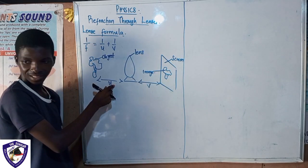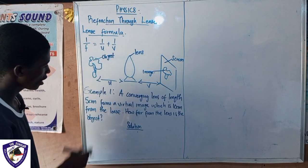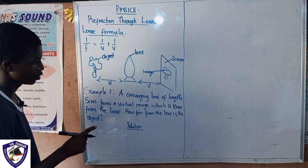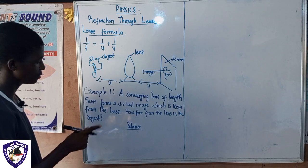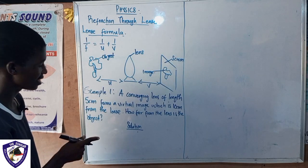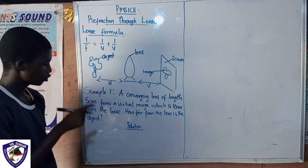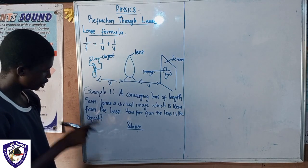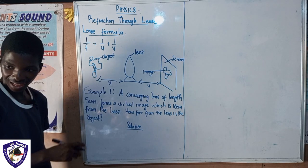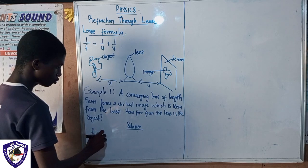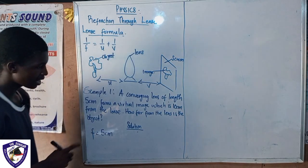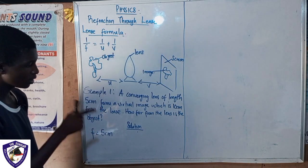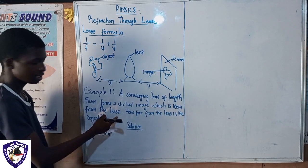Let us solve Example 1. We have a converging lens of focal length 5 centimeters that forms a virtual image which is 10 centimeters from the lens. How far from the lens is the object? So we are given the focal length of 5 centimeters, and we are given that the image is 10 centimeters from the lens.